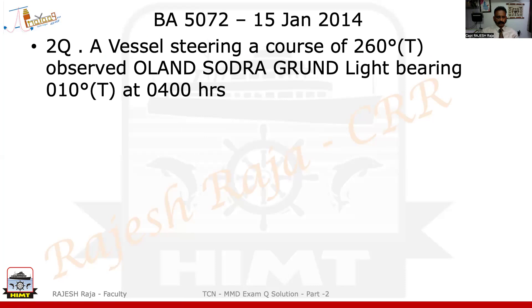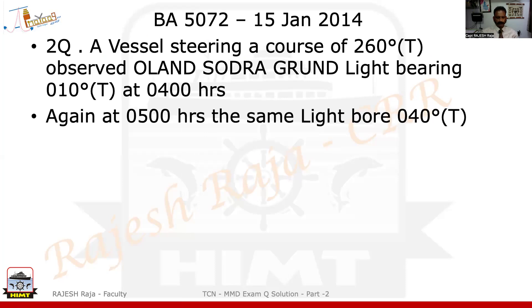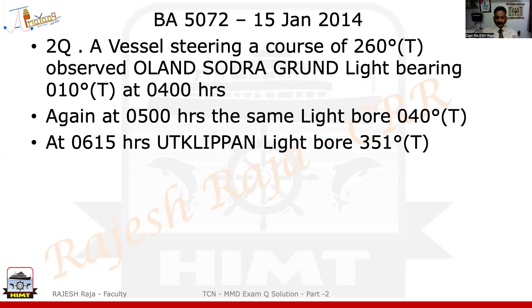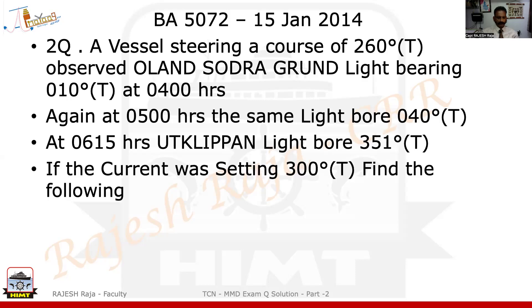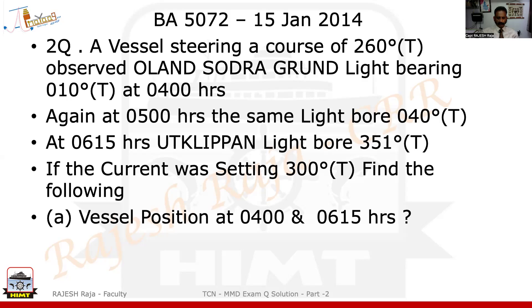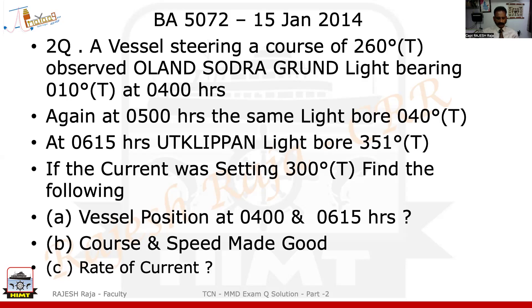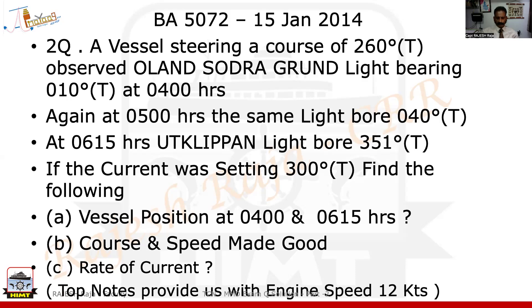A vessel is steering a course of 260°, observes Polansodra Grund light bearing 010° at 4 o'clock. Again the same lighthouse at 5 o'clock bore 040°. At 6:15, a different lighthouse, Woodclip light, bore 351°. The current during this whole problem was setting towards 300°. Find the vessel's position at 4 o'clock and 6:15, the CMG and SMG, and the rate of the current. The top notes provide engine speed of 12 knots, which I'm going to use in this question.